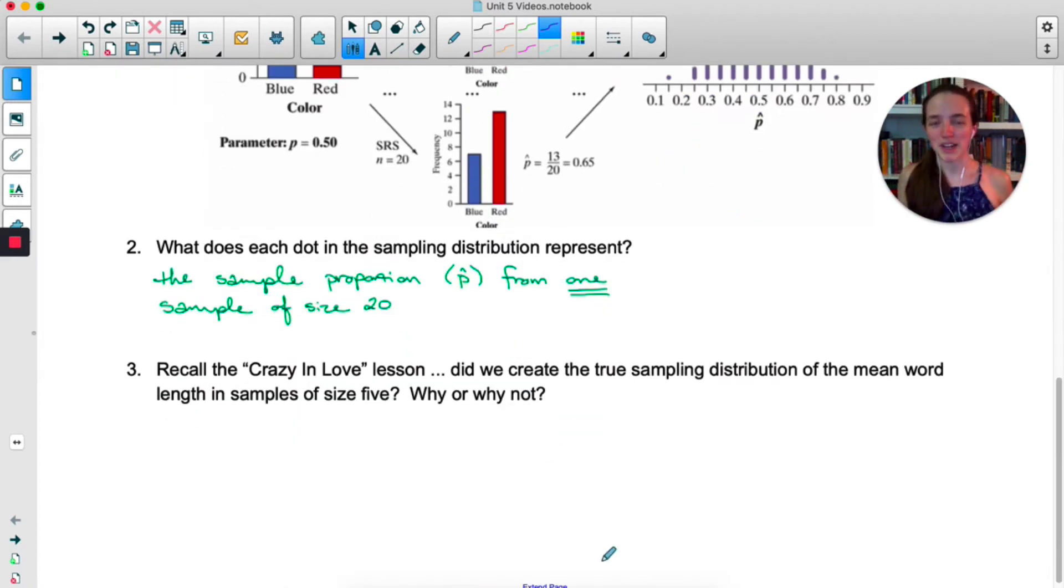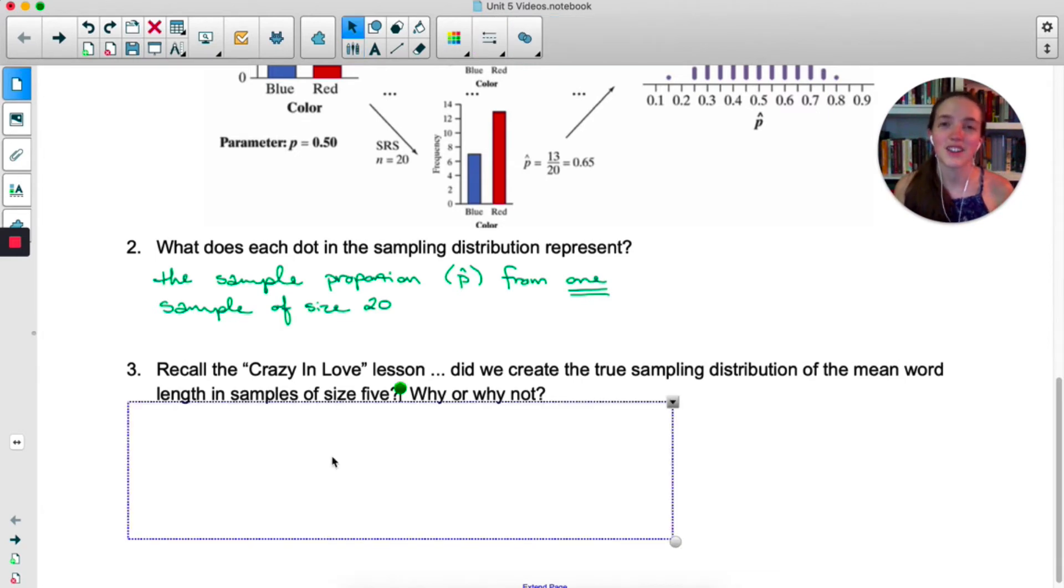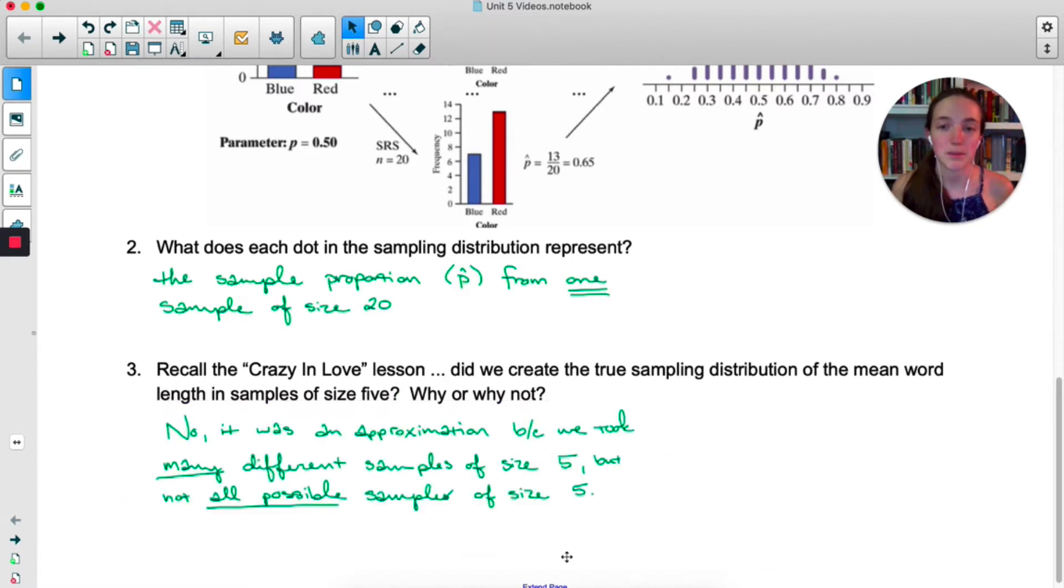Now let's think back to our crazy and love lesson. In that lesson, you were selecting five random words from crazy and love, calculating the mean or x bar from that sample, and then we put all of our data together into one dot plot. So think about that dot plot. Did we create the true sampling distribution of the mean word length for samples of size five? We did not look at every single sample of size five. So what we found was an approximation.